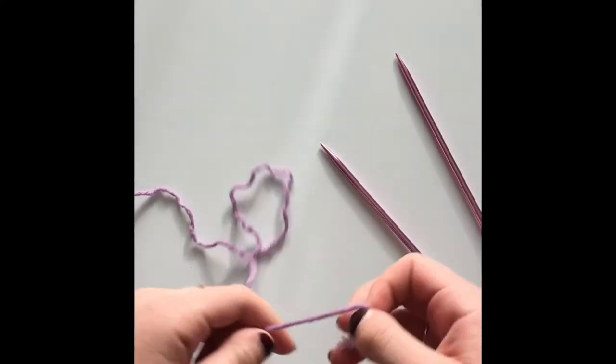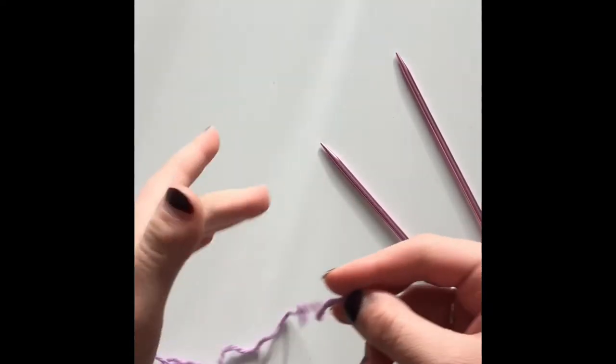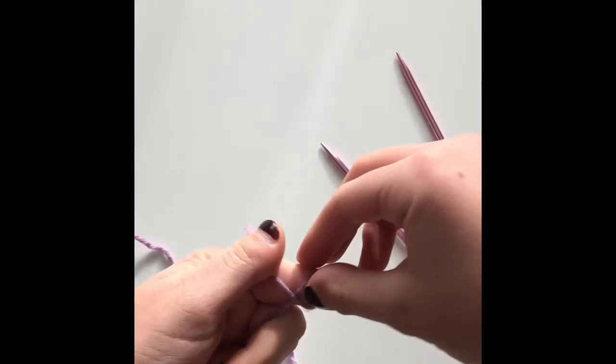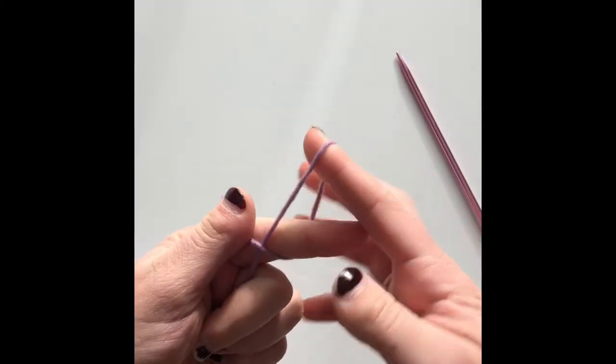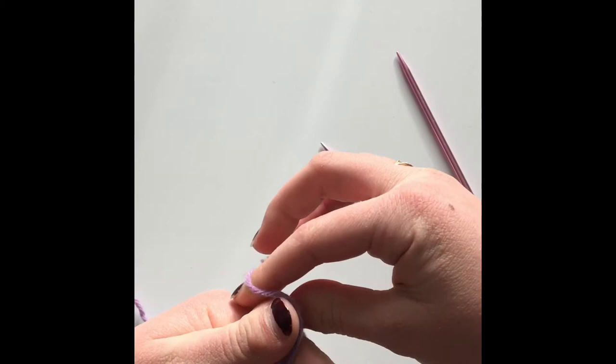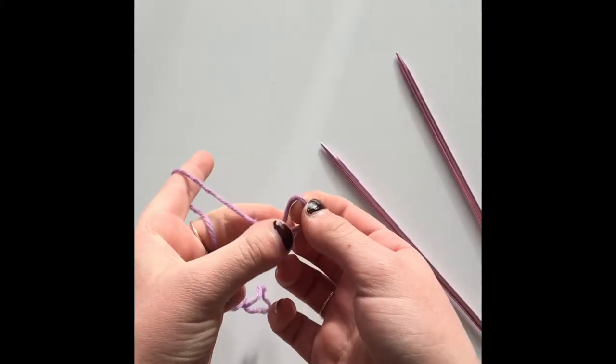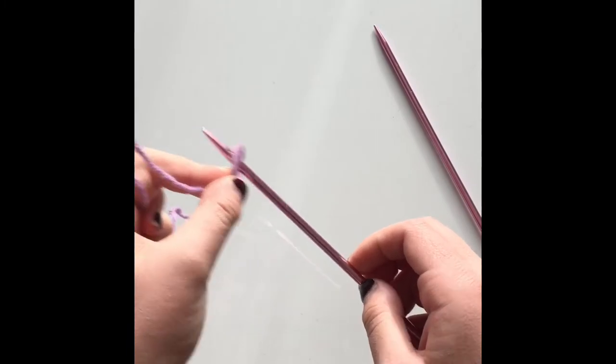Okay, so to start off the 80Y stitch, we are going to make a slipknot. A slipknot consists of wrapping the yarn on your finger, going through here, picking up this tail like this, and you are just going to slip that onto your needle right there.